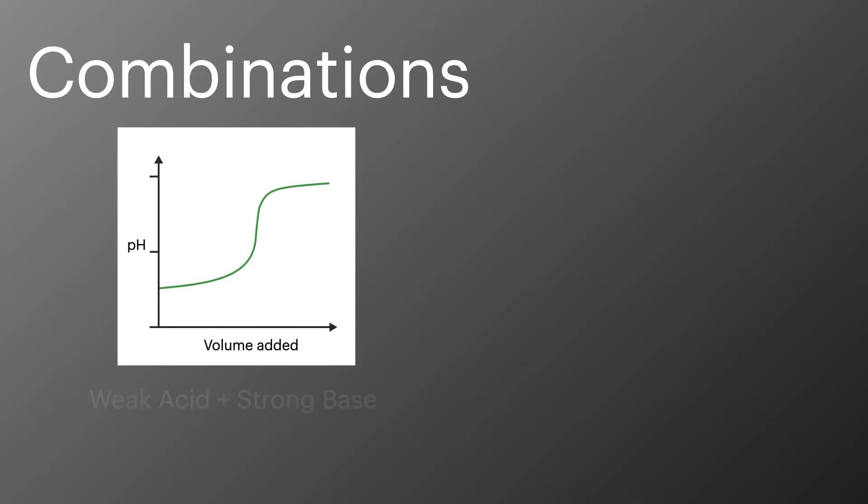In the next example we have a strong base being added to a weak acid. The pH starts around 5 and then rises to pH 14 with an excess of strong base. The equivalence point is well defined and has a pH of slightly above 7.